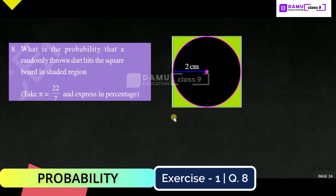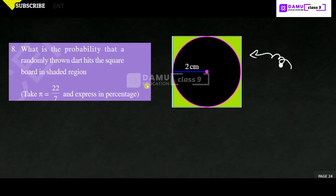Hello viewers. In this module we are going to discuss the 8th question: What is the probability that a randomly thrown dot hits the spire board in a shaded region? So, randomly thrown dot — let's take one dot thrown from here to there. It should touch only this shaded region. What is the probability to touch that one? Take pi as 22 by 7 and express in percentage.